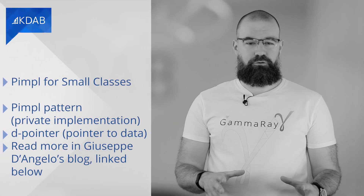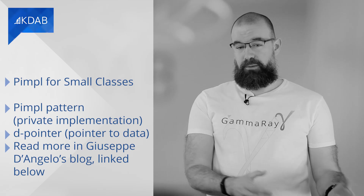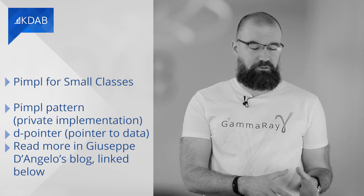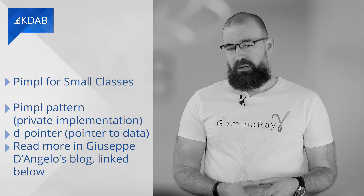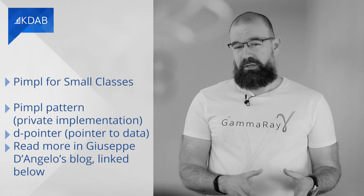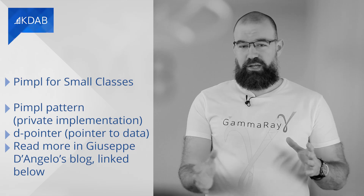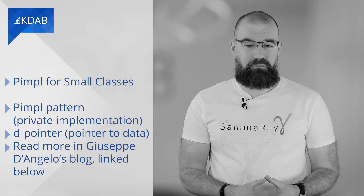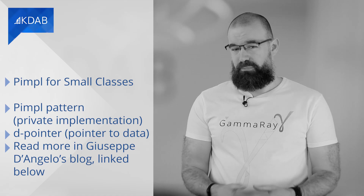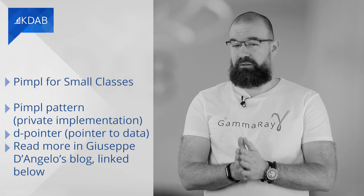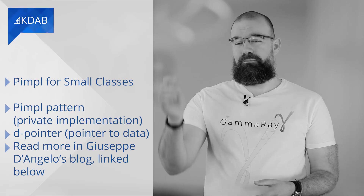The familiar solution for thick-valued classes that want to preserve binary compatibility is to use the pimpl pattern — private implementation, also known as dPointer, pointer-to-data. In the latest blog post by colleague Giuseppe D'Angelo, he explains how in future versions of a class you can freely change the contents of the pimpl, like adding, removing, or even modifying data members, but the binary compatibility of the public class gets preserved. You can read all about it by following the link below.